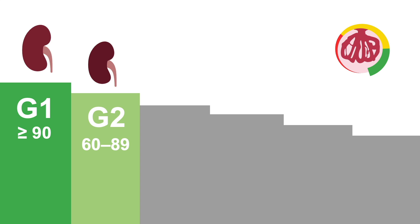G2, where GFR is 60 to 89 milliliters per minute per 1.73 meters squared. G3A, where GFR is 45 to 59 milliliters per minute per 1.73 meters squared.